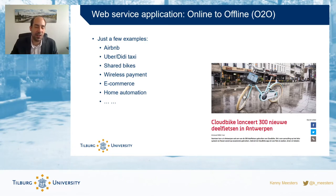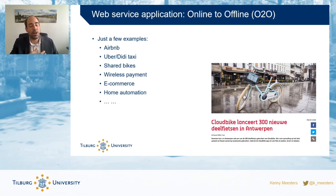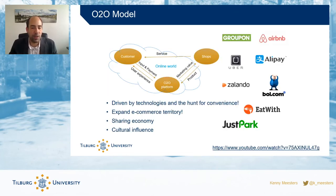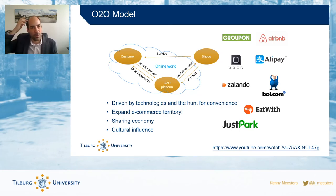These platforms bring together people who were previously disconnected — re-intermediation. They also allow people to transition from offline to an online community, and they offer people who were only online the ability to obtain offline services such as a physical bike or car ride. That model is driven by a lot of technologies and mainly driven because people are seeking convenience. Technologies enable that and they build on the convenience that people are looking for.